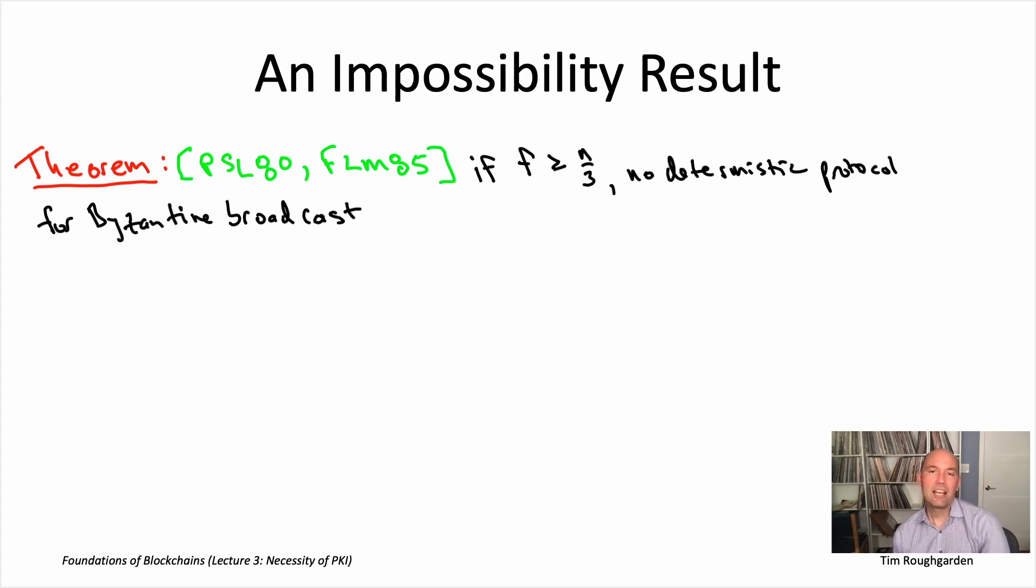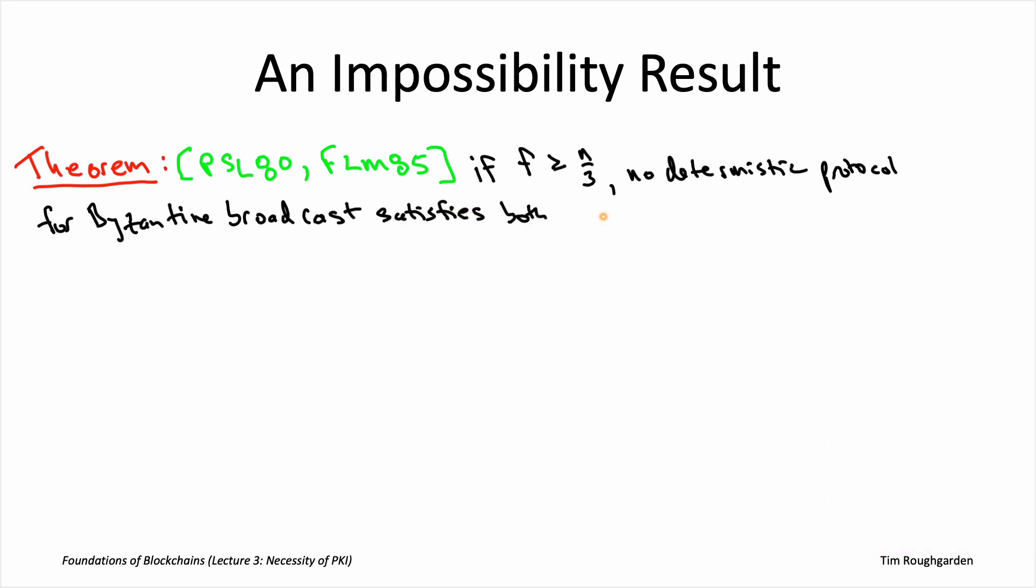And remember, correctness for Byzantine broadcast means two things. First, there's the safety condition, which is agreement - no matter what, whether or not the sender is Byzantine or honest, all of the honest nodes conclude the protocol with the exact same output. And then validity is the liveness condition, which says that in the event that the sender happens to be honest, not only should all of the honest nodes agree, but they should all agree on whatever the private input of that honest sender was.